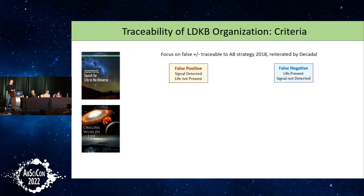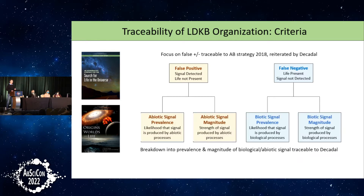For any of the features or potential biosignatures that appear within that taxonomy, we want to ask a specific and standard set of questions. We take as the basis for this assessment a recommendation from the 2018 National Academy's study on astrobiology strategy. They focused on assessing the potential for false positive and false negative — false positive being that you see a signal when life is actually not present, false negative being that life is present but you see no signal at all. The decadal in planetary science broke this down one more step, adding probabilistic components: what is the likely prevalence if life is there, what are the chances it creates the signal you're looking for, and how large in magnitude is that signal likely to be?